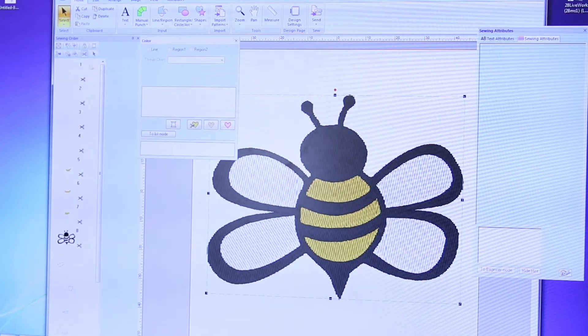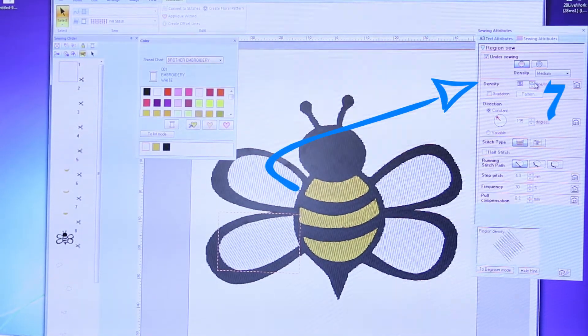Once this is done, go to the Sewing Attributes window and change the density to its max, which is 7.